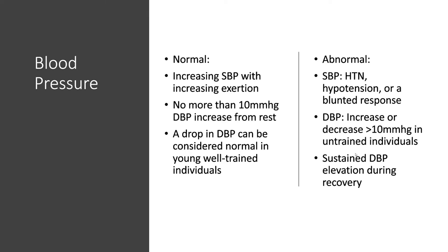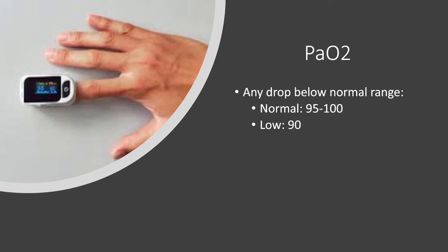Abnormal blood pressure responses include hypertension, hypotension, or no response at all — going too high, too low, or not changing is all abnormal. You want a gradual increase in systolic BP with exercise. An increase of DBP greater than 10 mmHg is always abnormal. A decrease of DBP greater than 10 is abnormal in untrained individuals. Any diastolic blood pressure elevation that continues into the recovery phase — still elevated five, six, seven, eight units a few minutes after stopping exercise — would also be abnormal.